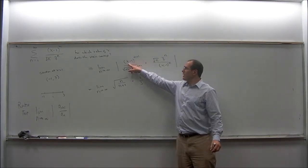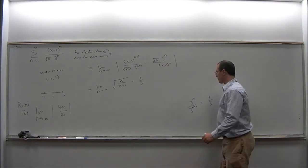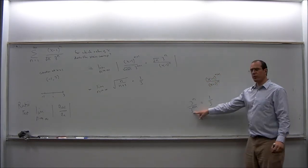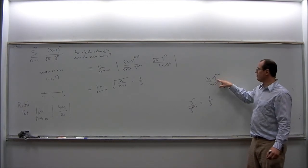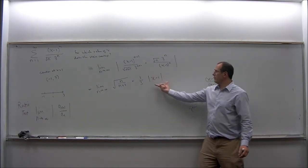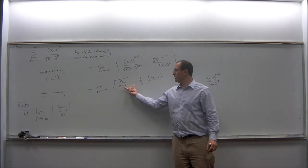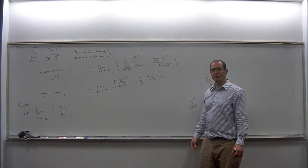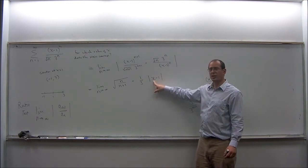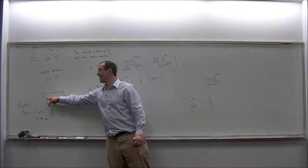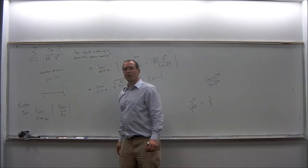And for the x's, x minus 1 to the power n+1 over x minus 1 to the power n — similar to what happened with the 3's, there's one more factor of x minus 1 in the numerator, so that's going to be x minus 1. Notice that I maintained the absolute value bars with the square root and the 1 third — these were positive quantities and didn't need to be in the absolute value bars. Since we don't know the value of x, we can't be sure if x minus 1 is positive or negative, so it's important to leave the absolute value bars here. Those absolute value bars are responsible for creating an interval symmetric around the center.